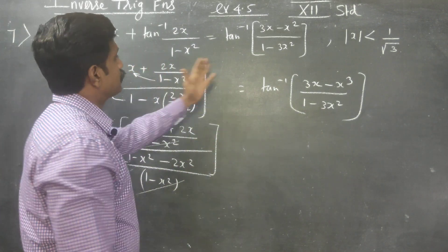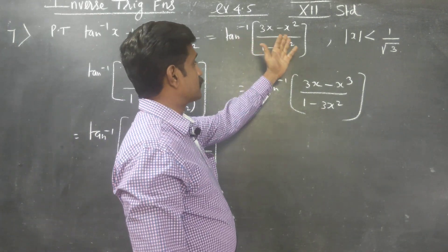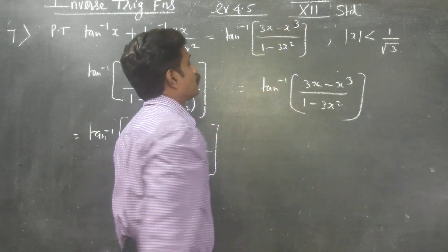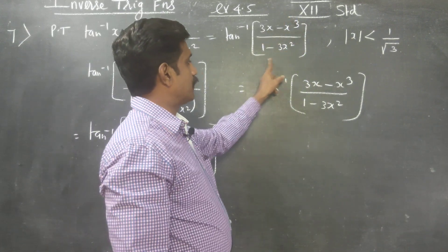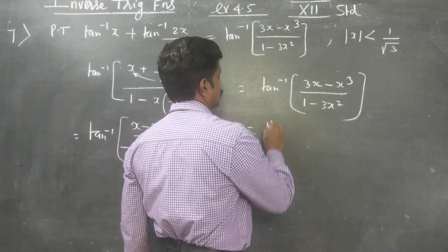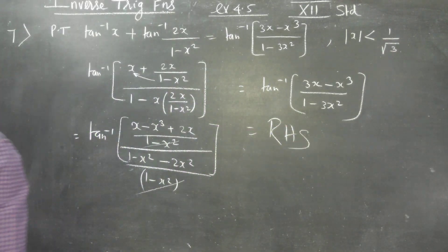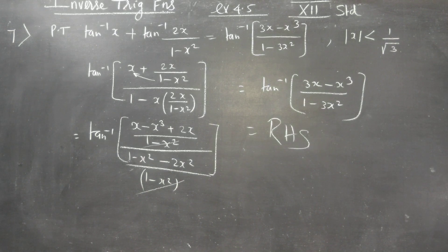Therefore our LHS is equal to, sorry, RHS is equal to tan inverse of 3x minus, sorry, this is x cube. I am very sorry, this is x cube, 3x minus x cube by 1 minus 3x square. This is your RHS. Just we are using the formula, tan inverse of x plus tan inverse of y is equal to tan inverse of x plus y by 1 minus x into y.